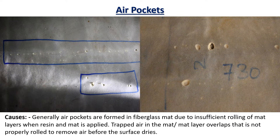Generally, air pockets are formed in fiberglass mat due to insufficient rolling of mat layers when resin and mat are applied. Trapped air in the mat or mat layer overlaps that is not properly rolled to remove air before the surface dries. These air pockets mostly occur at the overlapping edges of the GRE lining. All air pockets are in a line which is the overlapping junction of the adjacent GRE lining. These air pockets are easily breakable, which allows the stored product to penetrate through the lining and affect the remaining layers.